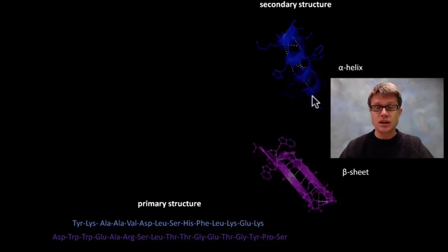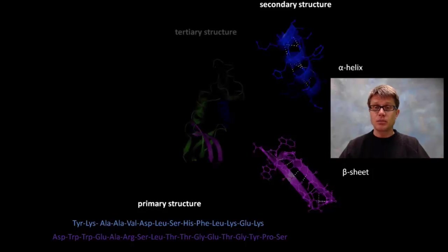A helix looks like this. A beta pleated sheet is going to be two sides that are attached to each other, and these little dots in the middle are going to be hydrogen bonding between adjacent sides of that polypeptide. So this is the structure. It comes out first. It's going to be linear. Next we have the alpha helices, the beta pleated sheets.